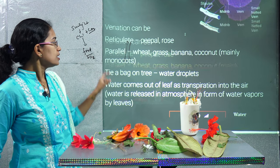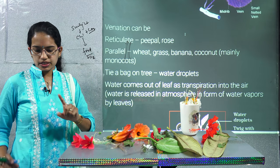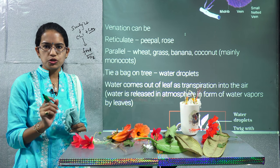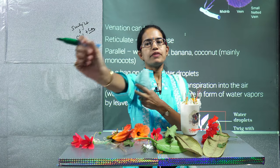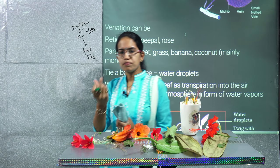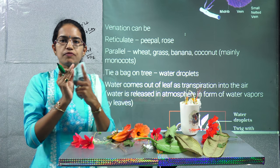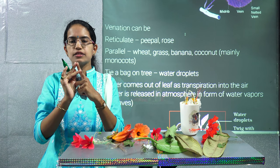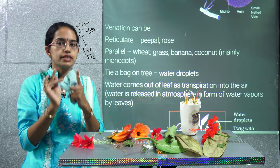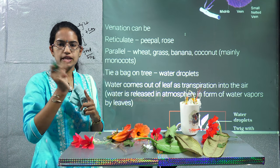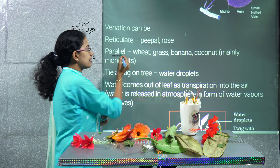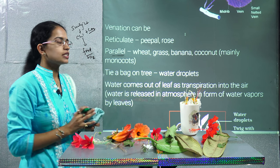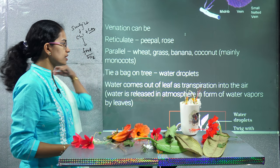One very interesting study is that parallel venation is seen mostly in monocots. What are monocots and dicots? If we take any example of a pulse — let's take pea as an example — when we open the upper layer of the pea, the seed would break into two, and therefore we say it's a dicot. A monocot has just one single formation, and parallel venation is usually common in monocots. Common examples are wheat, grass, banana, and coconut. Reticulate venation on the other hand is seen in peepal, rose, and other trees.